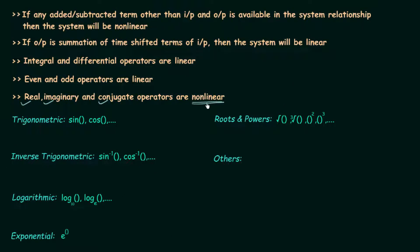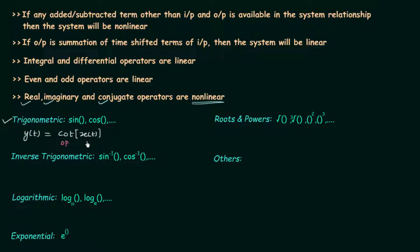You can see different families of nonlinear operators on your screen. We start with the first family: the family of trigonometric functions. Examples are sin, cos, tan, cot, etc. For example, if output y(t) is equal to cot of x(t), then cot is the operator acting on the input x(t). Since trigonometric operators are nonlinear, the system is nonlinear.